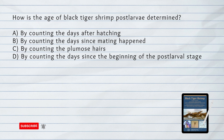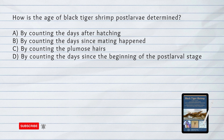How is the age of black tiger shrimp post-larvae determined? A. By counting the days after hatching. B. By counting the days since mating happened. C. By counting the plumose hairs. D. By counting the days since the beginning of the post-larval stage.